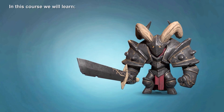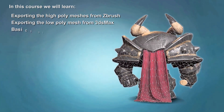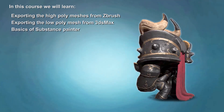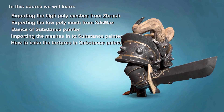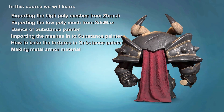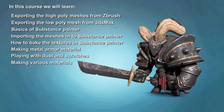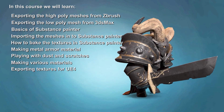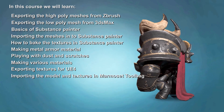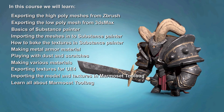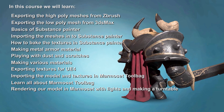In this course we will learn: exporting the high poly mesh from ZBrush, exporting the low poly mesh from 3ds Max, basics of Substance Painter, importing the meshes into Substance Painter, how to bake the textures in Substance Painter, making a metal armor material, playing with dust and scratches, making fabric material, making emissive glowing eyes, exporting textures for Unreal Engine 4, importing the model and textures in Marmoset Toolbag, and learning all about Marmoset Toolbag.